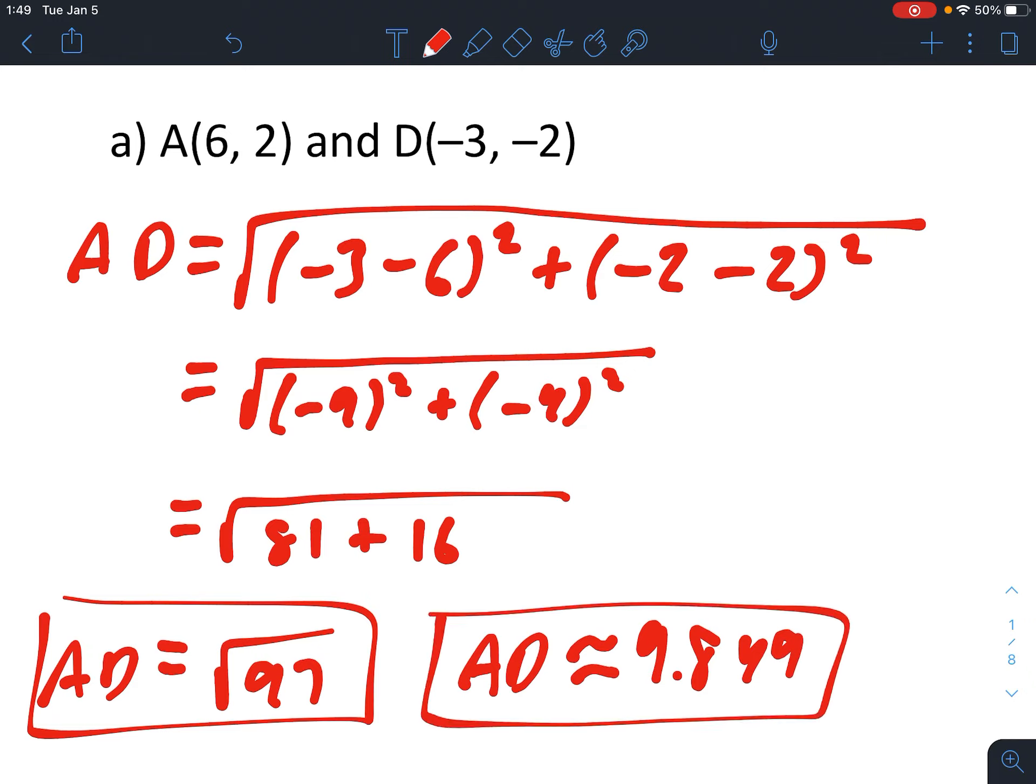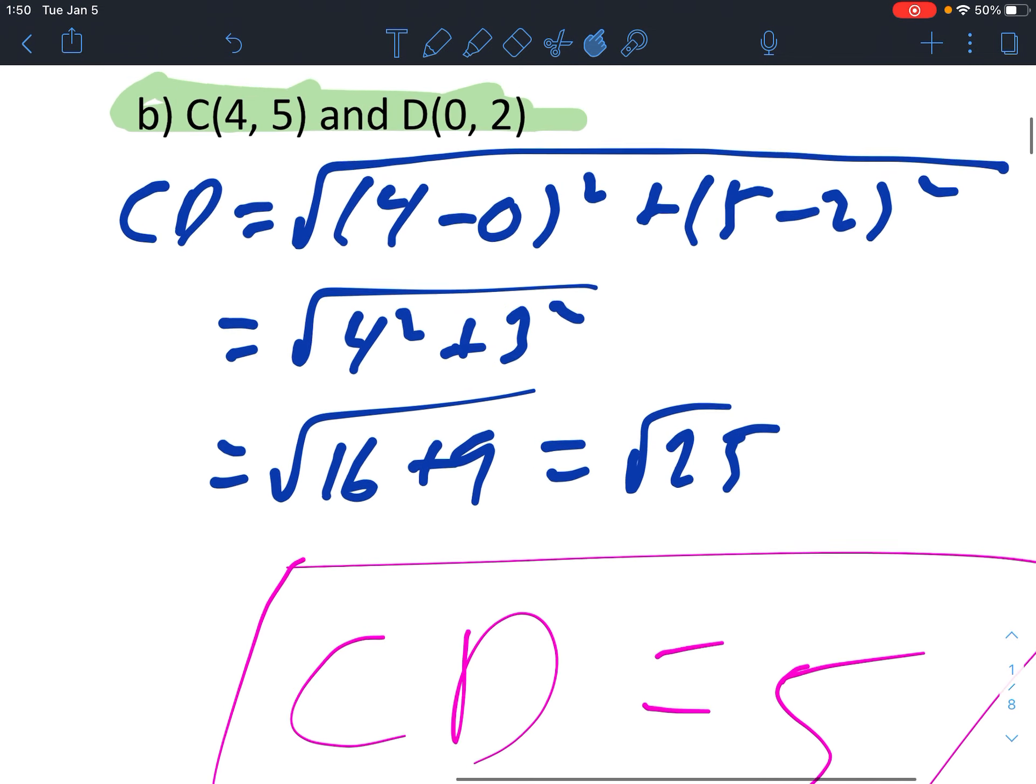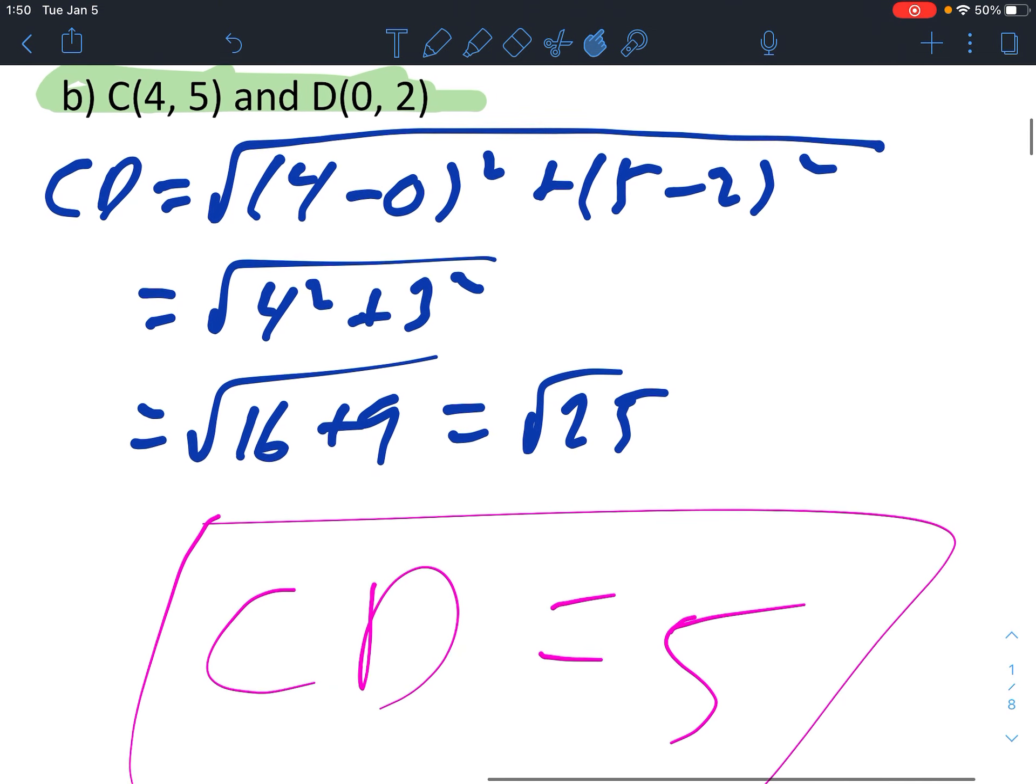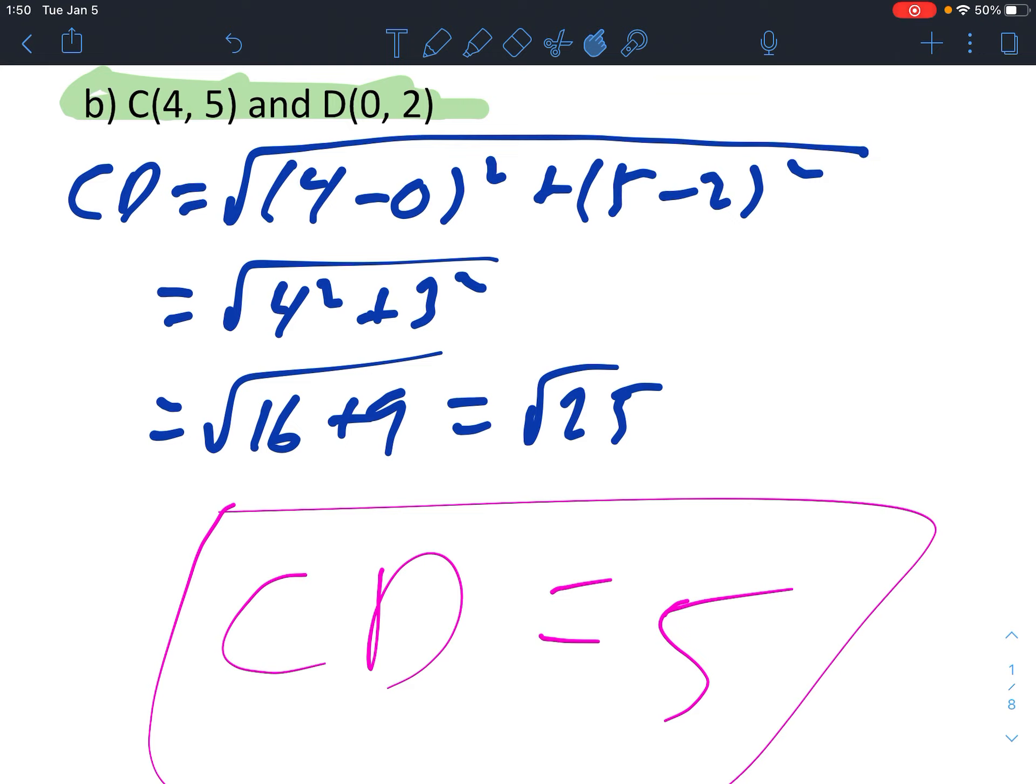I would like you to try the second one there. So go ahead and pause the video, try the second one, come back when you're ready. Here's the answer for the second problem. You should have got root 25, and of course the square root 25 is 5.